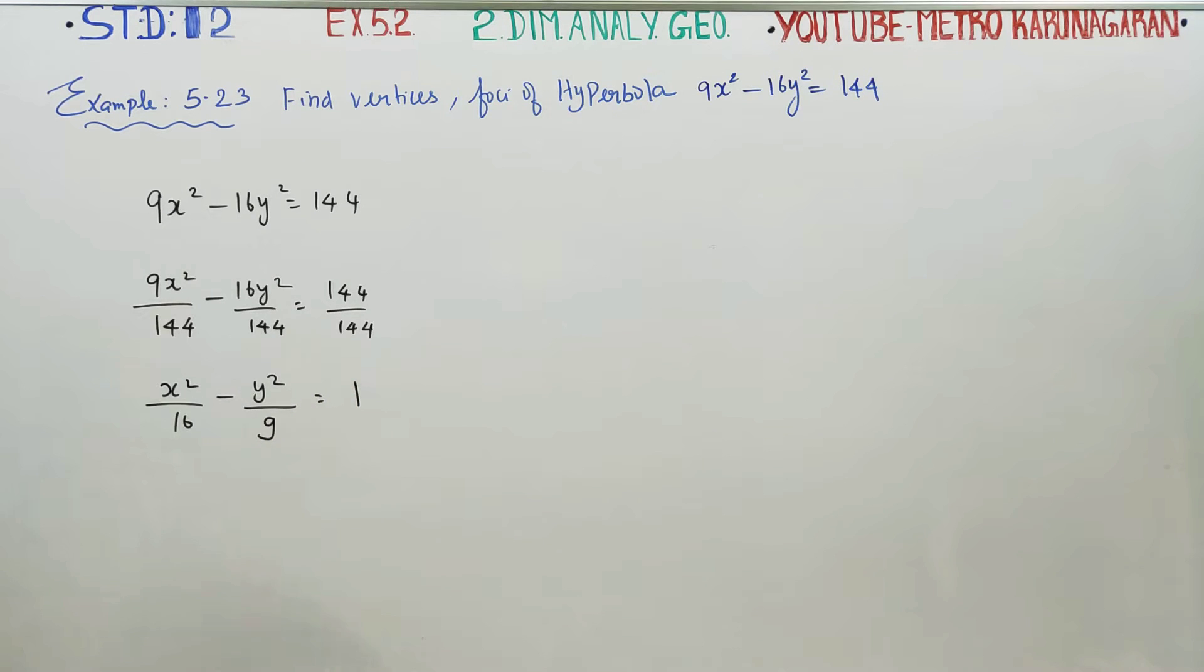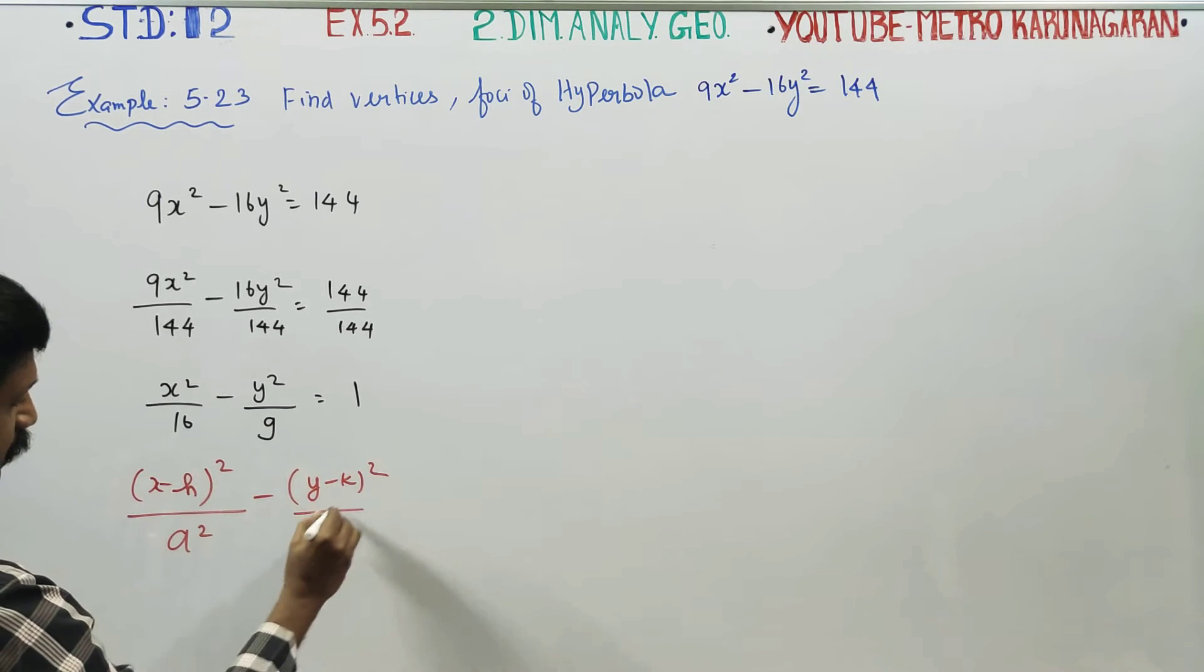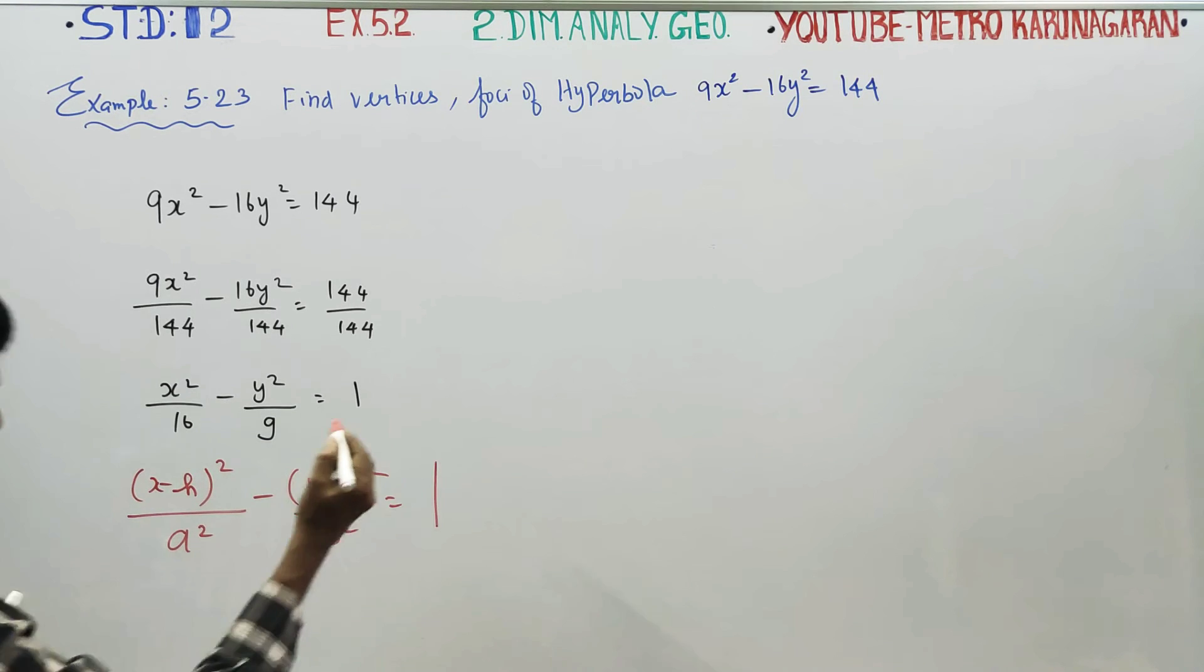It matches with the formula (x minus h)² by a² minus (y minus k)² by b² equals 1. It matches with this formula.